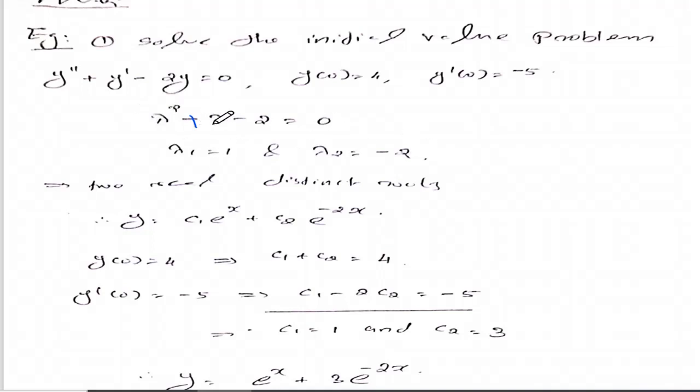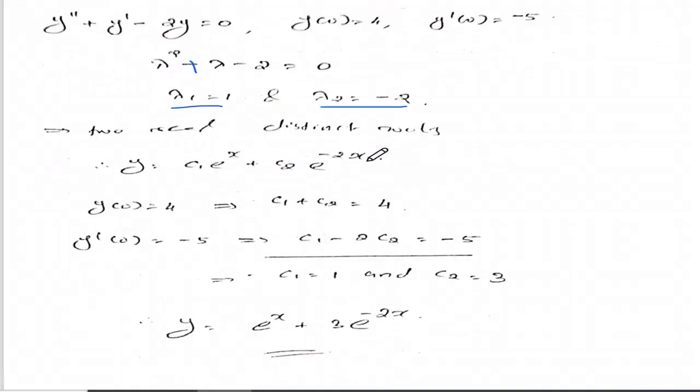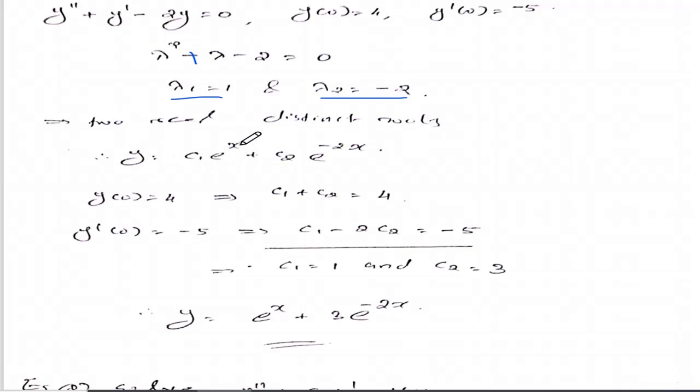Substituting to verify the roots: 1 plus 1 minus 2 equal to 0. For lambda 2, minus 2 whole square gives 4, minus 2 minus 2 equals 0. The roots are real and distinct, so the solution is y equal to c1 e raised to x plus c2 e raised to minus 2x.